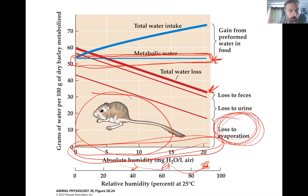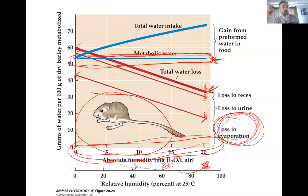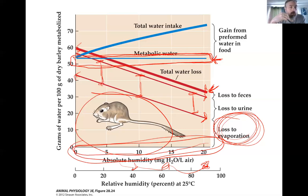If we look at the lines here — water loss due to evaporation, water loss to urine, and total water loss altogether — they're all parallel. Which is to say, the amount of water he or she loses to urine and to feces is constant. The only change that we experience is this water loss due to evaporation.